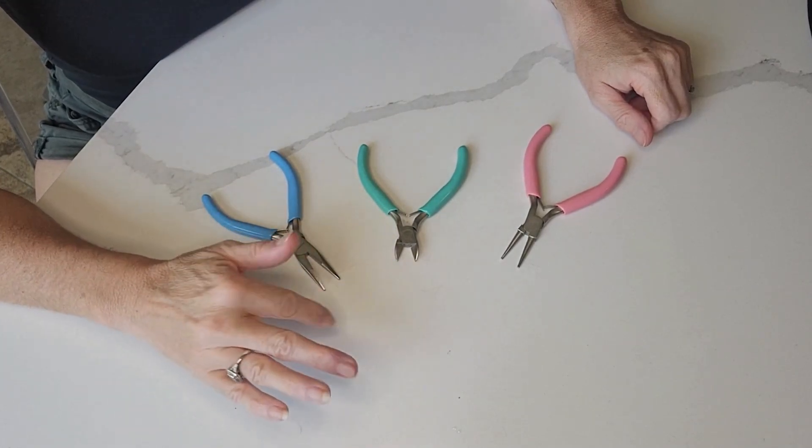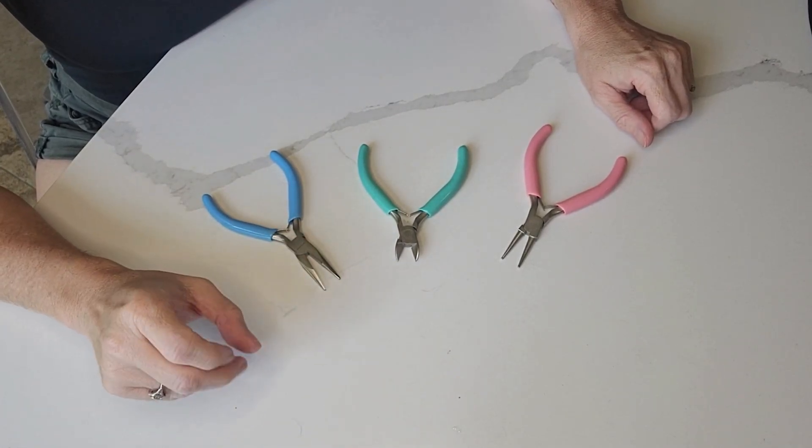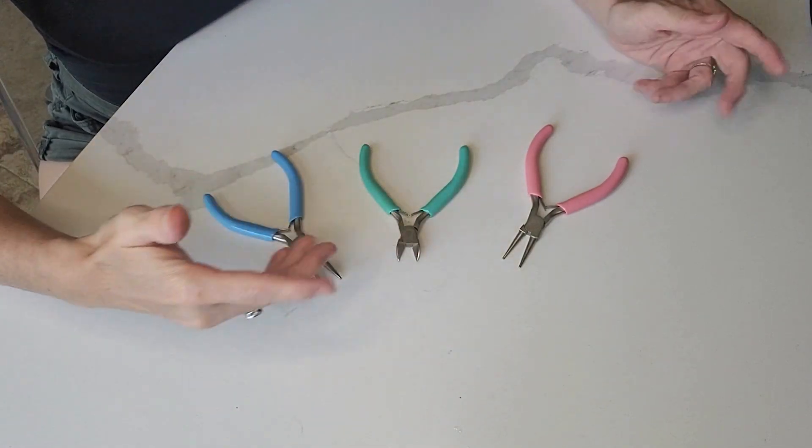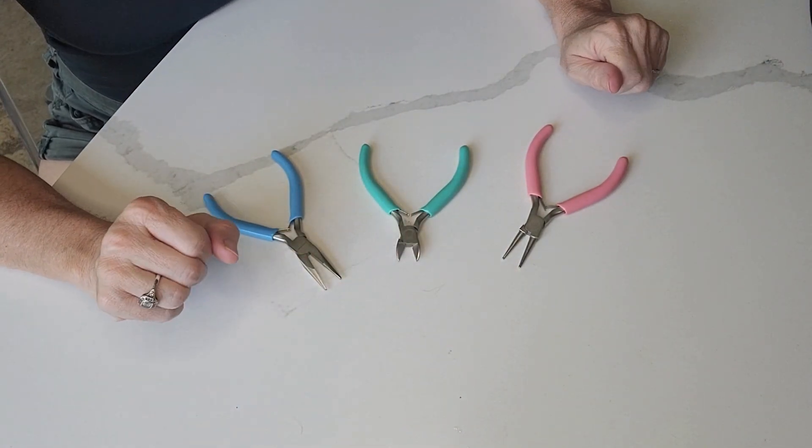This is my review of the Work Pro Jewelry Plier Set. This is a three-piece pack of jewelry making tools. My kids and I love to make jewelry so this is the perfect set for us.